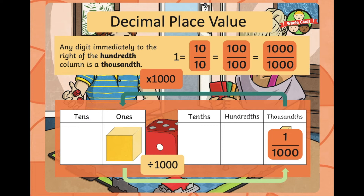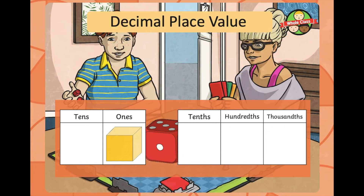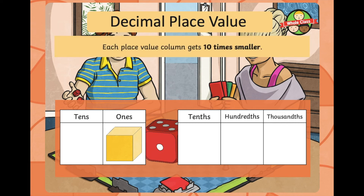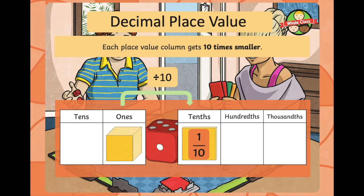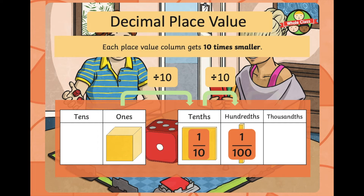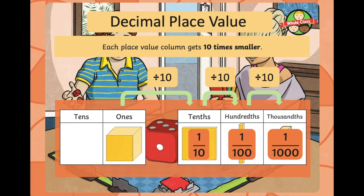Multiply 1 thousandth by a thousand and you get 1; divide 1 by 1,000 and you get 1 thousandth. So by dividing 1 by 10, then dividing 1 tenth by 10, we get 1 thousandth.